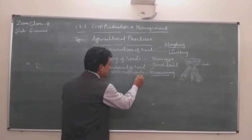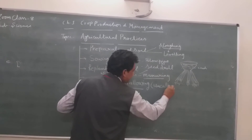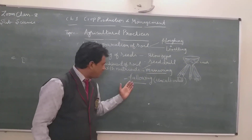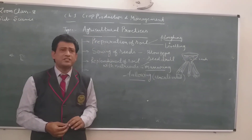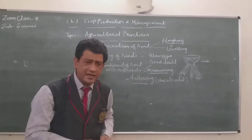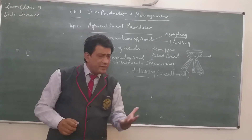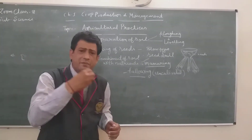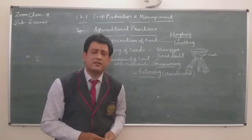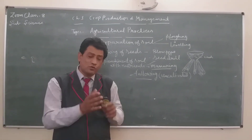One method is the Fallowing method. Fallowing means leaving the land uncultivated. When we leave the agricultural field open after cutting the crop, it gets proper sunlight and air. The waste products left after cutting the crop also slowly decompose into organic matter with the help of microorganisms and bacteria in the soil.